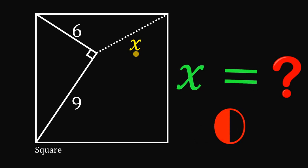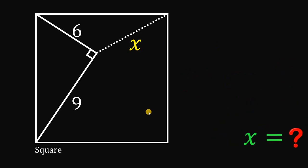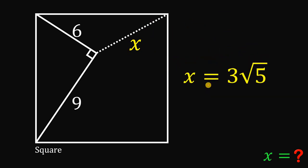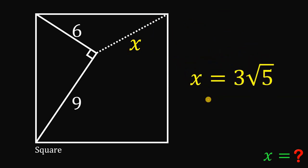Now let's answer this question together. Before we answer, I'll show you the answer first: the length of segment X must be equal to 3 multiplied by the square root of 5.